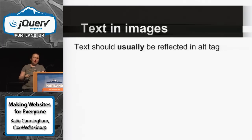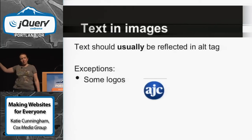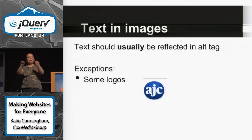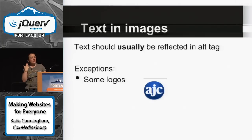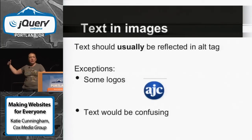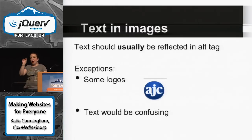Text should usually be reflected in the alt tag, but there are exceptions — some logos. This is from one of our newspapers, and when screen readers read it, they just say the letters run together oddly. You actually want to separate those letters. You might want to listen to it on a screen reader to hear how it's actually being read out. You can also eliminate things like 'www' and '.com' even if that's in the image, because our eyes just glance over it — you can just say 'The Statesman.'